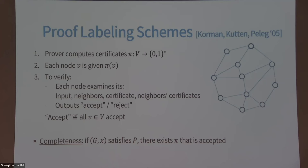What we want is the same as in NP: completeness — if the property does hold, there is a certificate assignment the prover could compute that would make everybody accept — and soundness — if the property doesn't hold, nothing the prover does will convince everybody to accept. There will always be somebody who notices something wrong, though it can be a different node for every certificate assignment.